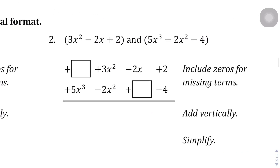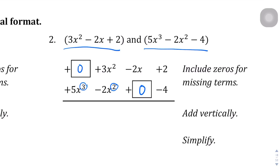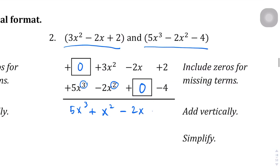Question 2 — we're going to do the same here, just lining up the like terms. This first expression doesn't have anything with x to the power of 3, so we put 0 there, followed by x squared, x to the power of 1, and the constant. The second expression has x to the power of 3 and 2x squared, but no x to the power of 1 term, so we put 0 there. Adding straight down: 0 plus 5x cubed is 5x cubed; 3x squared minus 2x squared is x squared; negative 2x plus 0 is negative 2x; and 2 minus 4 is negative 2. So here is the simplified expression.